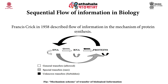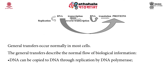Sequential flow of information in biology follows the central dogma, which is also called the mechanism scheme of transfer of biological information. The scheme was given by Francis Crick in 1958 as a mechanism of protein synthesis, according to which DNA transcribes into mRNA and this mRNA translates finally into protein. The sequential flow describes three types of transfers. Firstly, there is the general transfer, also believed to be the allowed transfer.